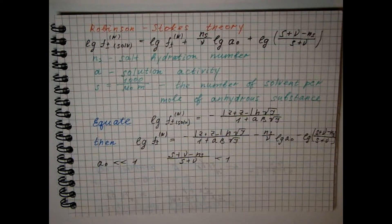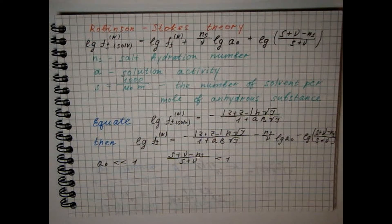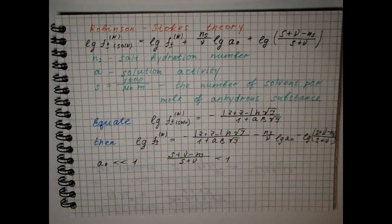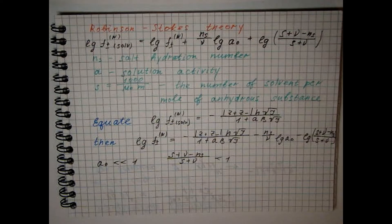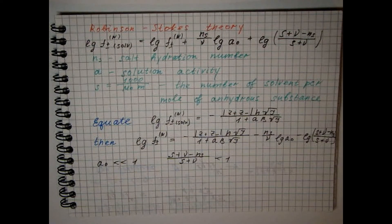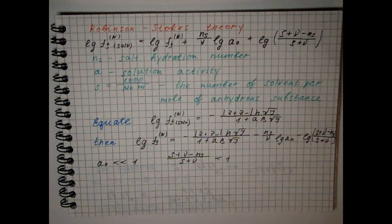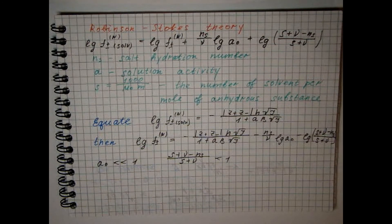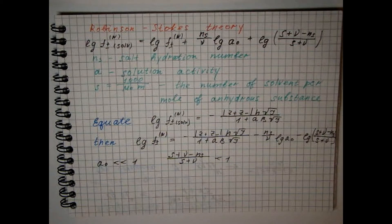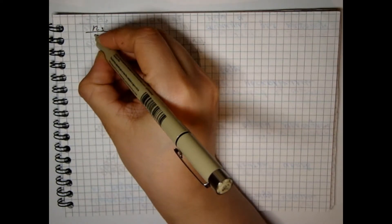Also, the proposed equation, as well as the third approximation of the Debye-Huegel theory, contains two empirical parameters. It is preferable because the quantity n has a certain physical meaning. If we neglect the second term on the right-hand side of this equation and assume that, then this equation can be written as